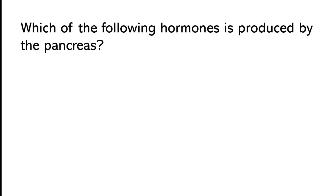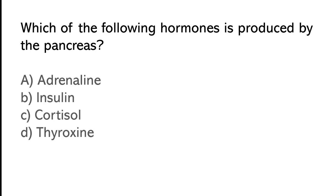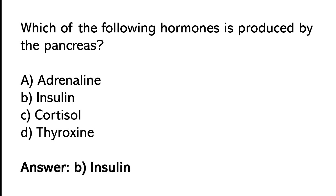Which of the following hormones is produced by the pancreas? Adrenaline, insulin, cortisol, thyroxine. The correct answer is option B — insulin.